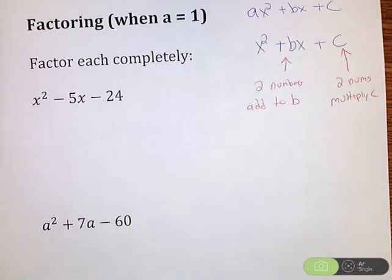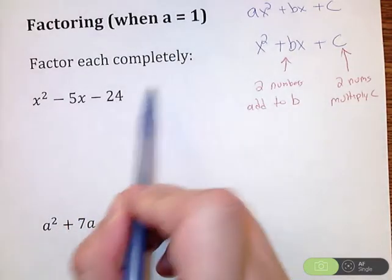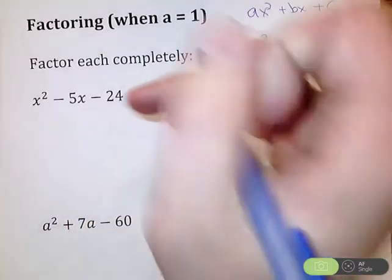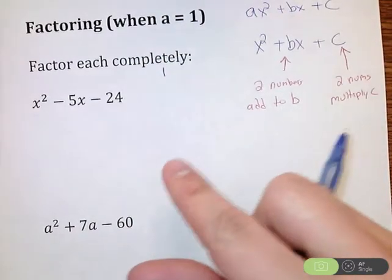Now, with these, we could have two negative numbers, two positive numbers, a positive and a negative, whatever. What I do is I'm going to start writing out pairs of numbers that multiply to 24. So this is a very beginner kind of move to do. Over time, a lot of students can look at this and think two numbers that multiply to negative 24 and add to negative 5.